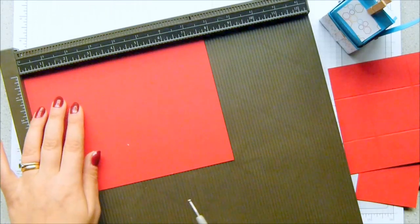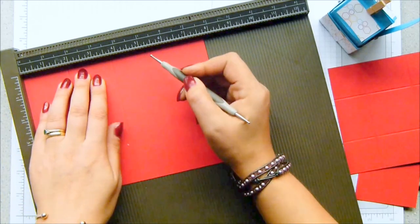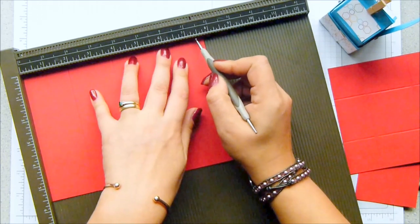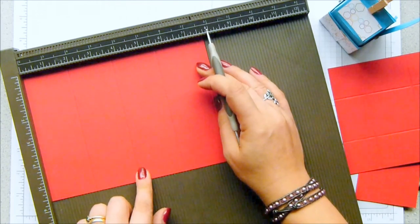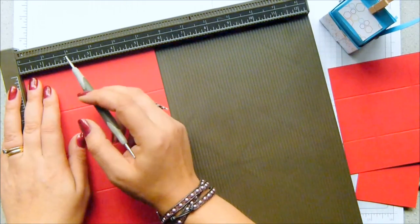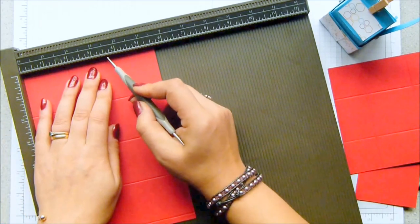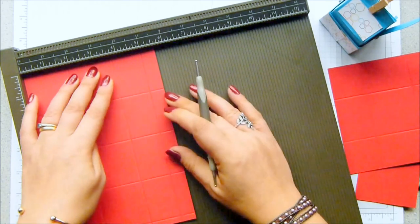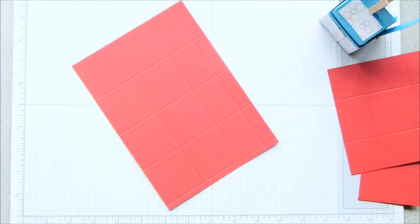Okay. And to make the milk carton itself, score this one at 1 7/8, 3 3/4, 5 5/8, and at 7 1/2 inches. We've got a very thin little strip there. And that is 4.5, 9, 13.5 and 18 cm. And then you turn it around. Score the base on the short side at 1 7/8, 3 3/4, and at 5. And in metric, that is going to be 4.5, 9, and 12.5. Okay, so that's the scoring done.